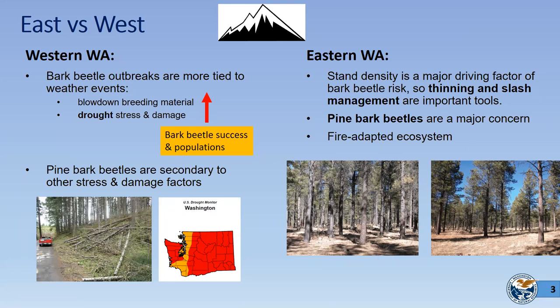In eastern Washington, stand density is a key factor. This photo on the left — a higher-density ponderosa pine stand — has definitely higher bark beetle risk than the photo on the right where the stand has been thinned. With less competition stress, trees have more access to water, nutrients, and light to defend themselves. The east side is a fire-adapted ecosystem, and thinning mimics what low-intensity fire would naturally maintain.